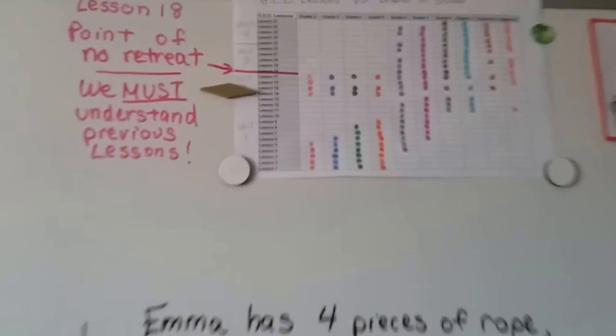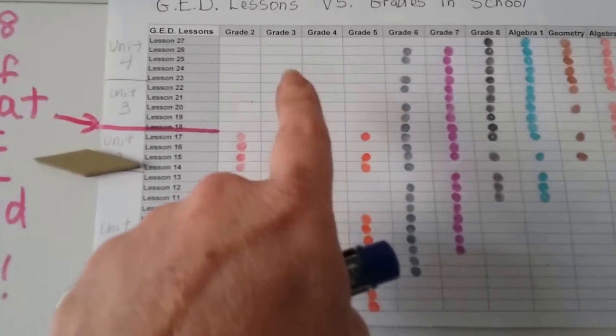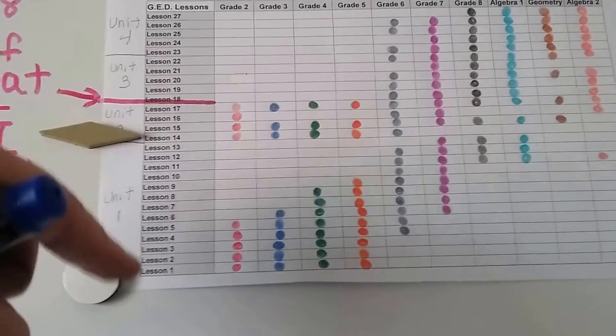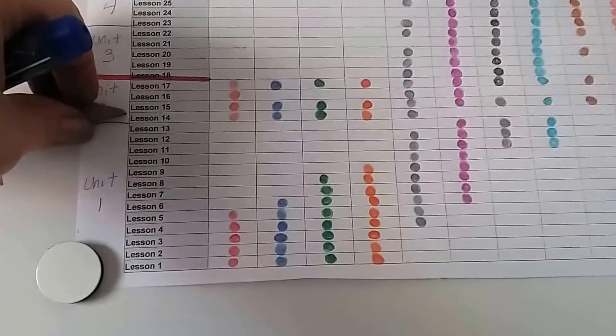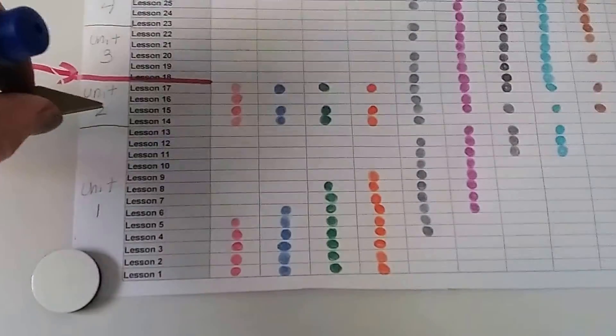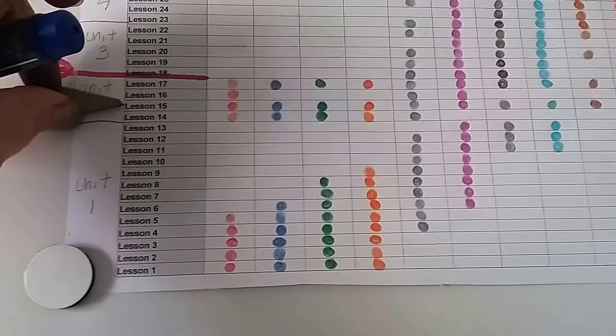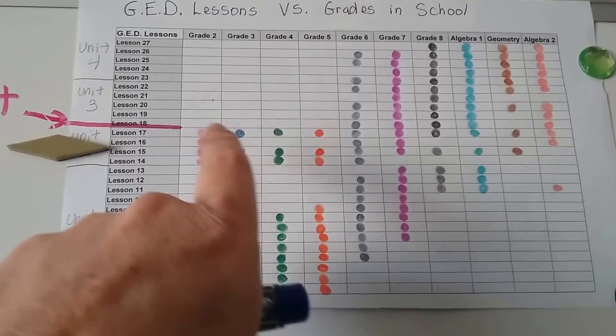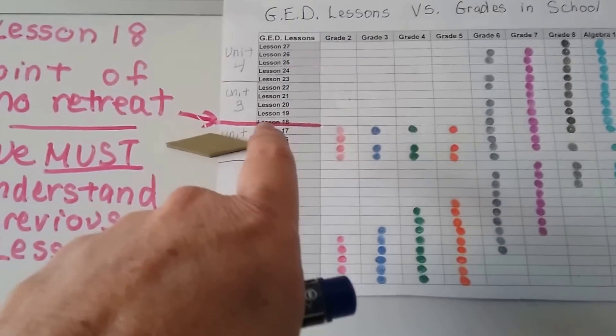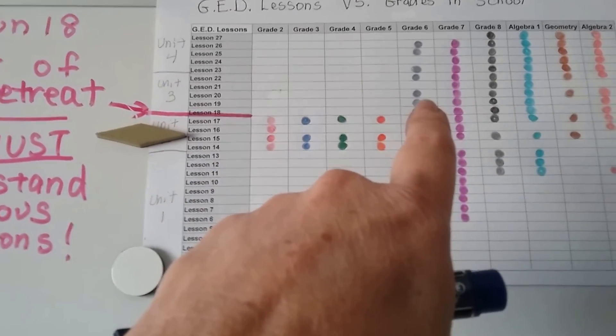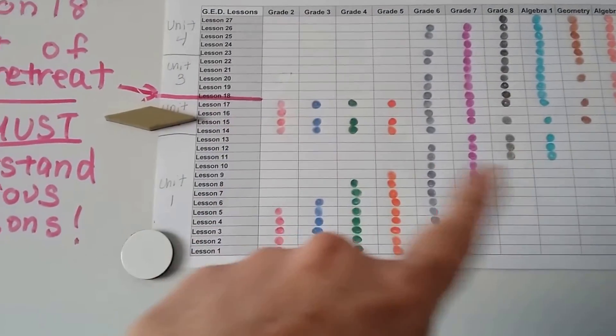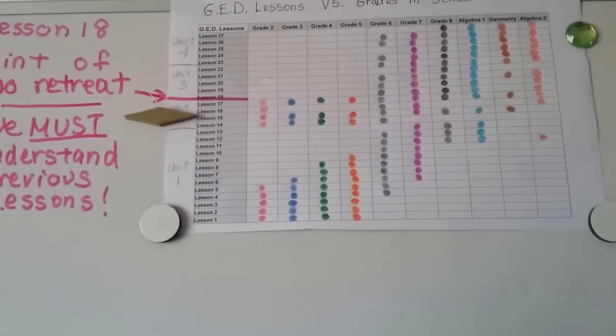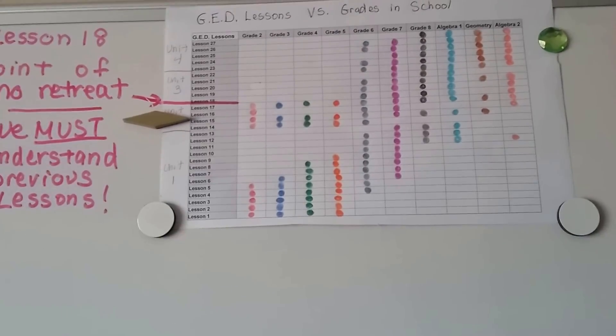You should know everything up to lesson 14 by now because we're moving on to lesson 15. And if you look at our chart and you see how far we've come, these are all the grade school, high school, middle school lessons that correlate with the GED lessons coming down this way. We're now in unit 2 at lesson 14 right here where this is pointing. And we're moving to lesson 15. So we're still doing some stuff that's covered in grade school. But as soon as we get to lesson 18, that's the point of no return because that's all middle school and higher. So you really need to know all of these earlier lessons, because once we get to lesson 18, it's going to get harder.